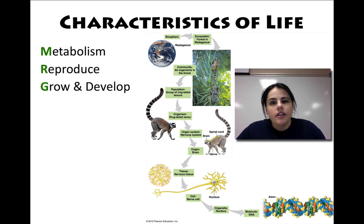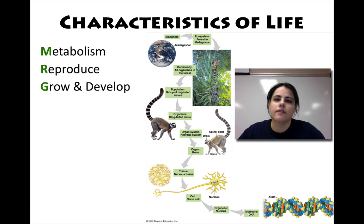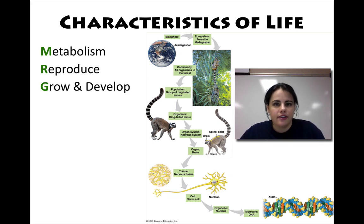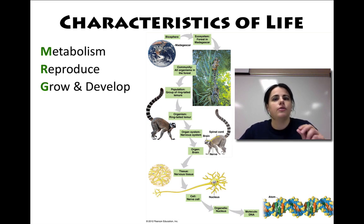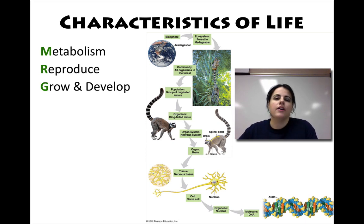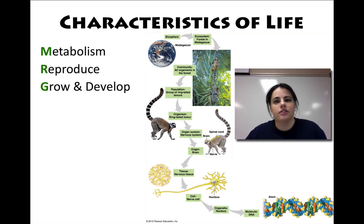The third thing that all living things have to do is grow and develop. Growth talks about getting bigger, and development talks about going through different stages in which the shape or anatomy changes. For example, cells can grow from pretty small to bigger in size. But if you start with a zygote, it will develop into an embryo, which develops into a fetus, which develops into a baby, which develops into a juvenile, then into adolescence, and eventually adulthood. That shows a developmental process.